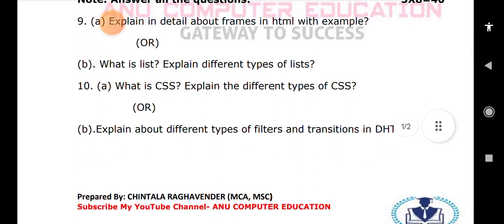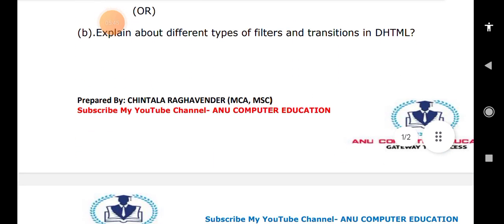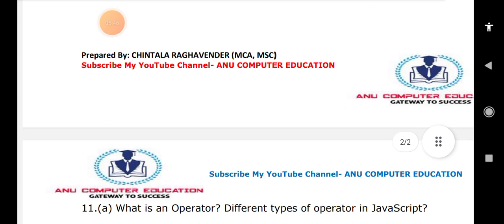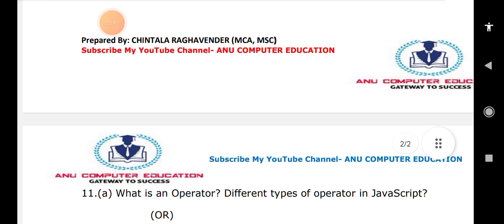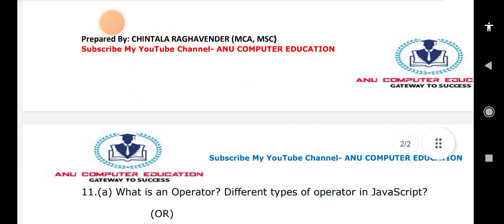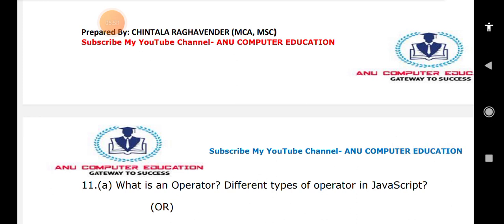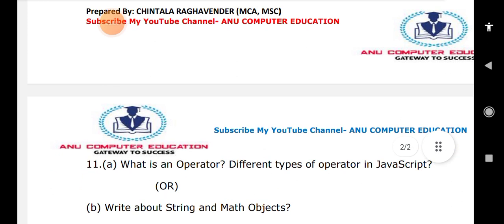Next, when it comes to units two and three: what is an operator? An operator is a symbol. We have many types of operators: arithmetic operators, binary operators, unary operators, and ternary operators. You have to write all these operators with explanation.